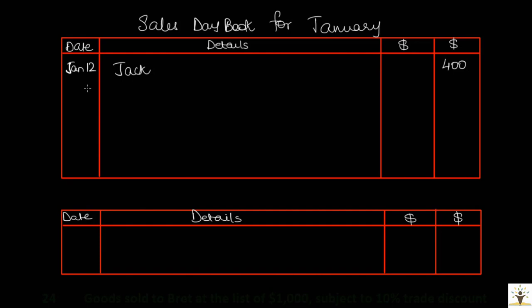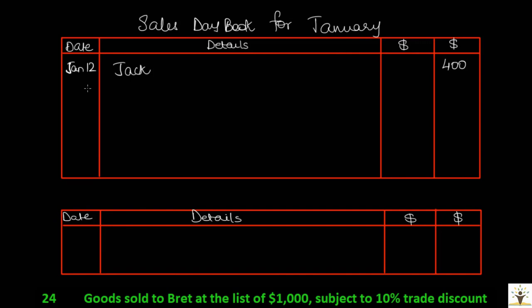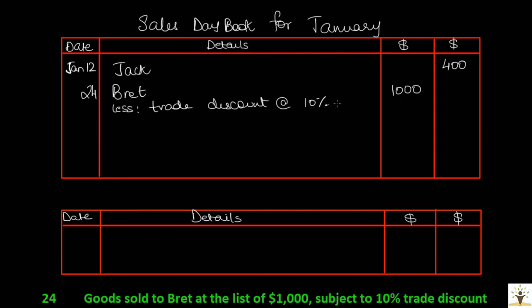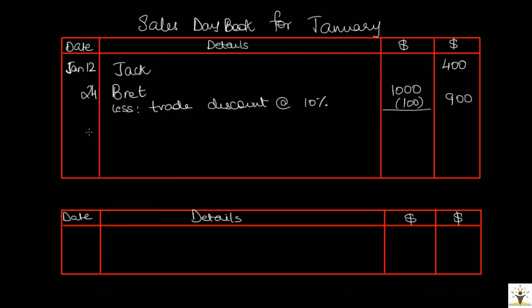On Jan 24, goods were sold to Brett at a list price of $1,000, subject to a trade discount of 10%. In the date column Jan 24, details Brett. Since trade discount is involved, use the working column: list price $1,000, less trade discount at 10% = $100, and the final amount after discount recorded in the last column is $900.